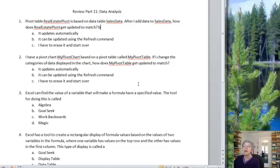I have a pivot chart, my pivot chart, based on a pivot table called my pivot table. If I change the categories of data displayed in the chart, how does my pivot table get updated to match?